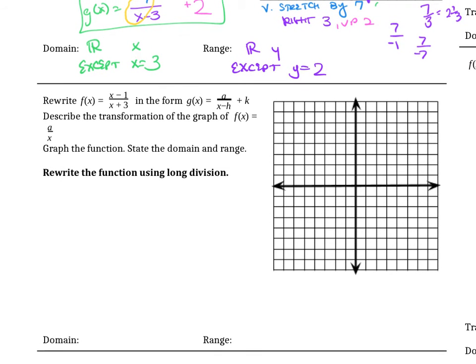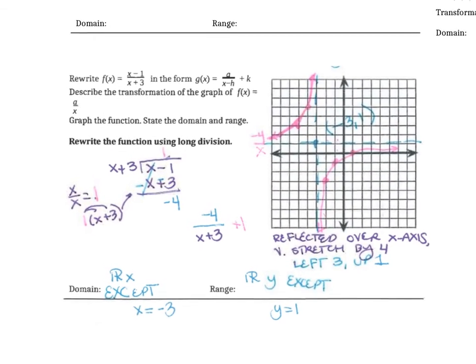So try this example down here. Use long division to find the new form g(x) equals a over x minus h plus k. And then describe the transformation, how does it shift right or left, and then describe the domain and range.